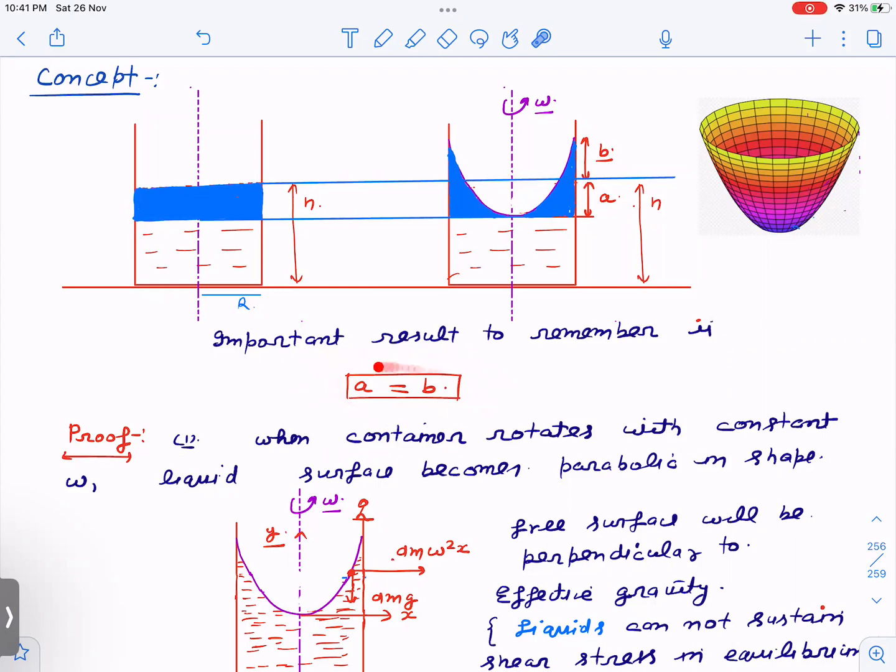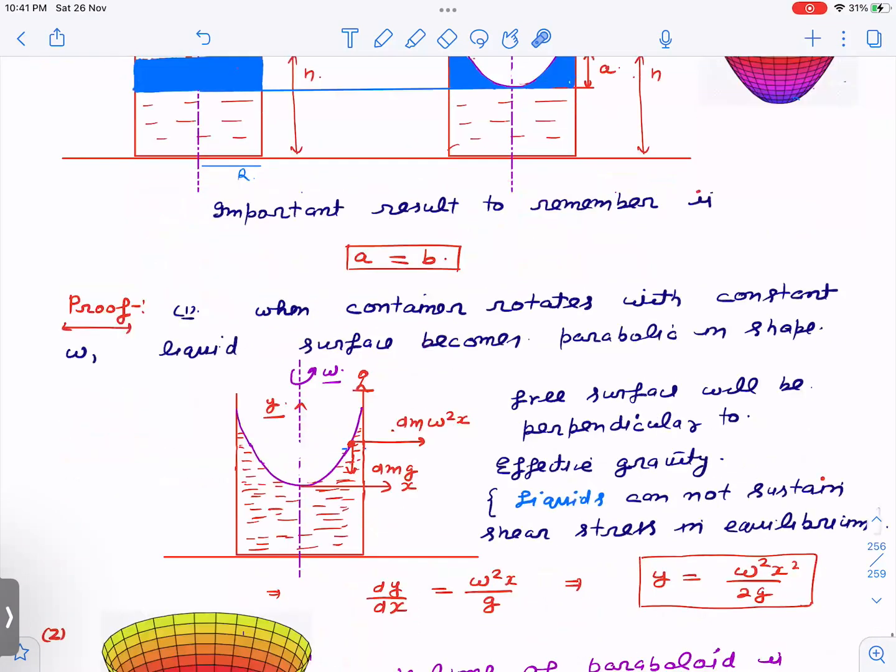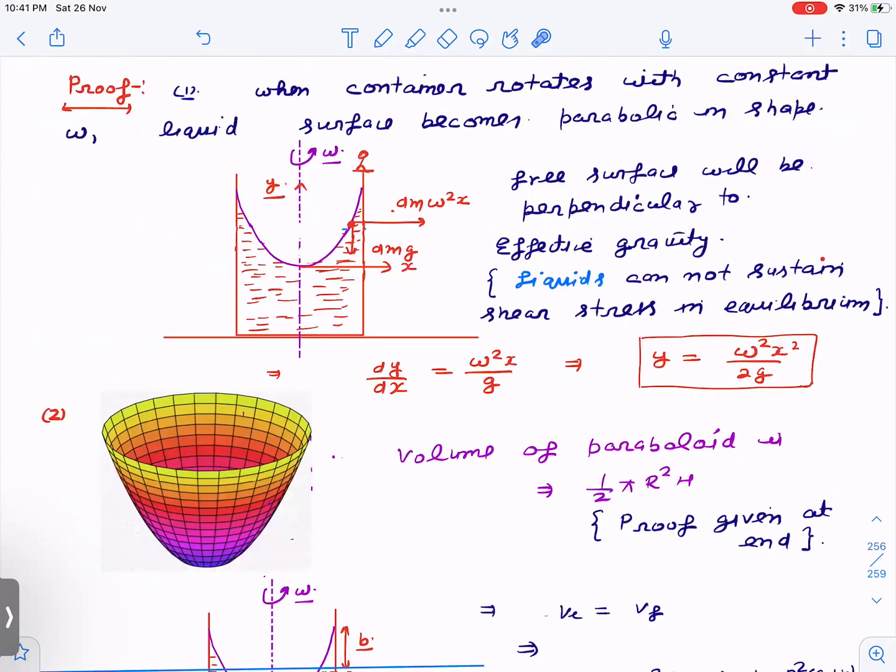So let's just prove this very quickly, and then we will apply this in questions and see how we can solve the questions very easily, just in one line. So when container starts rotating with constant omega, liquid surface becomes parabolic. I'm talking about 2D cross-section. So this is the diagram with respect to now. I hope you know this already, but very quickly, we can discuss that also.